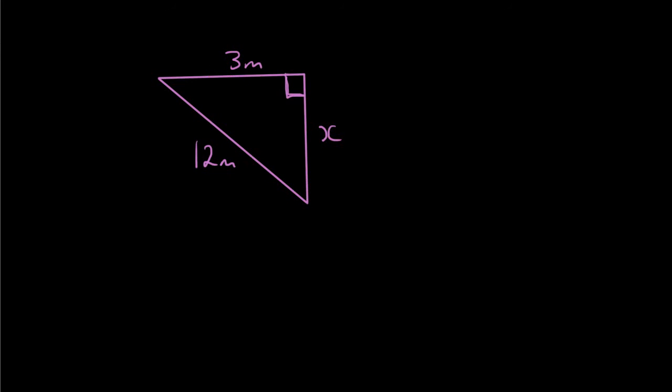So labeling the sides we have, this is the c. And let's make that a, b. a and b, it doesn't matter which one's which. As long as you've got the c side correct. a and b are just the two shorter sides.